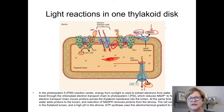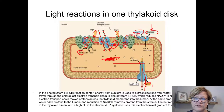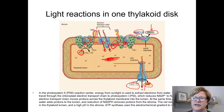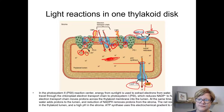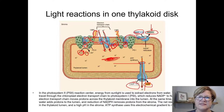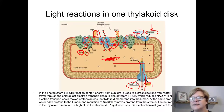So reactants of the light reactions are water, sunlight, ADP, and NADP+. Products are oxygen as a waste product, NADPH, and ATP. The point of the light reactions is really to generate the ATP and NADPH needed for the next phase — the Calvin cycle.